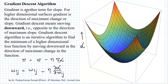Gradient is basically another term for slope for higher-dimensional functions. For higher-dimensional surfaces, gradient is the direction of maximum change or slope. Here I have taken an example of a three-dimensional surface where the horizontal directions correspond to our variables and the vertical direction corresponds to the value of the loss function.